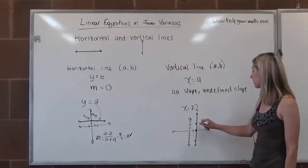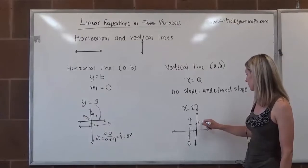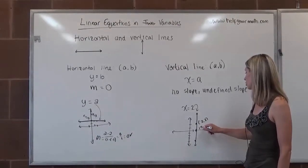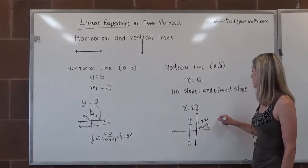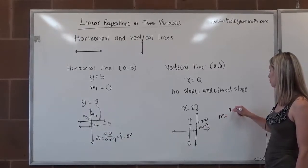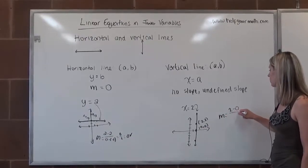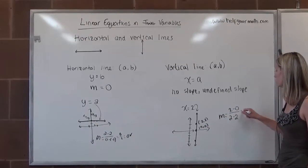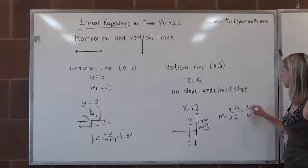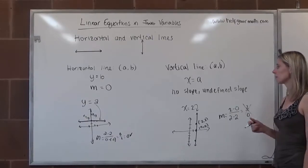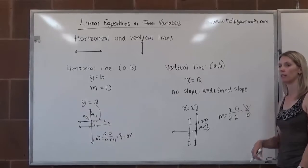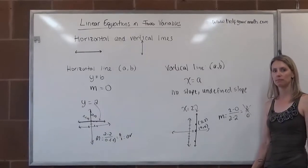To test the slope, using the points (2, 2) and (2, 0): the slope would be (2 – 0) over (2 – 2), which is 2 over 0. That's mathematically improper, which tells us the slope is undefined, or that there is no slope.